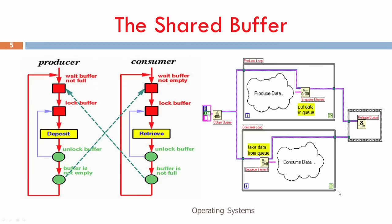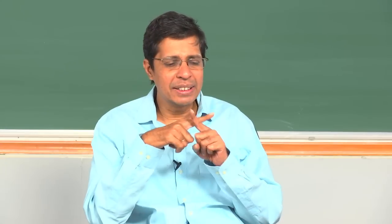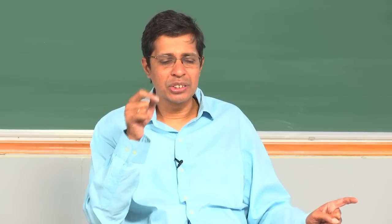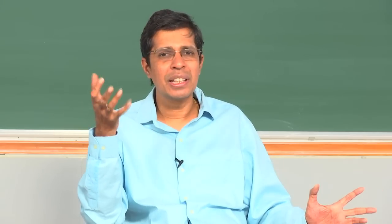For the consumer: it will wait until the buffer is not empty. If the buffer is empty, it waits until the buffer becomes not empty. A green signal comes from the producer saying it has produced something, so the buffer is certainly not empty. The consumer locks the buffer, retrieves the data, then unlocks. It then signals the producer that at least one location is empty — 'buffer is not full.' These two signals between consumer and producer are the synchronizing actions.